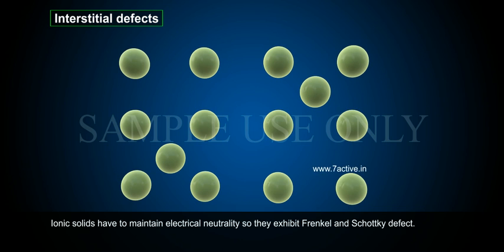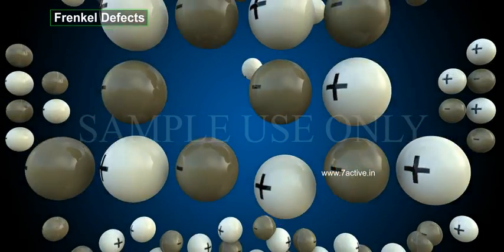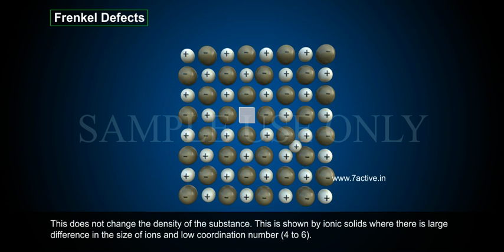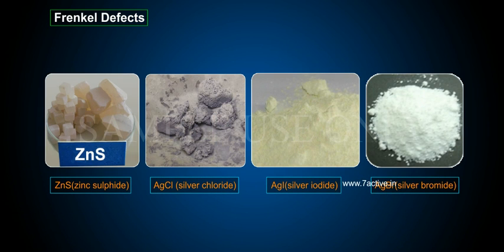Ionic solids have to maintain electrical neutrality, so they exhibit Frenkel and Schottky defects. Frenkel defect is observed when the smaller ion (cation) is displaced from its normal site and occupies an interstitial site. This does not change the density of the substance. It is shown by ionic solids where there is a large difference in the size of ions and low coordination number (4 to 6). Examples: ZnS (zinc sulfide), AgCl (silver chloride), AgI (silver iodide), and AgBr (silver bromide).